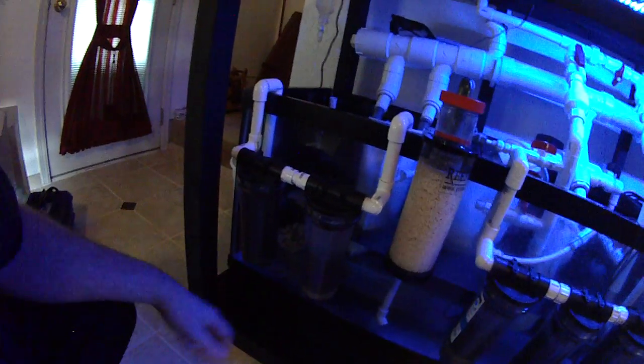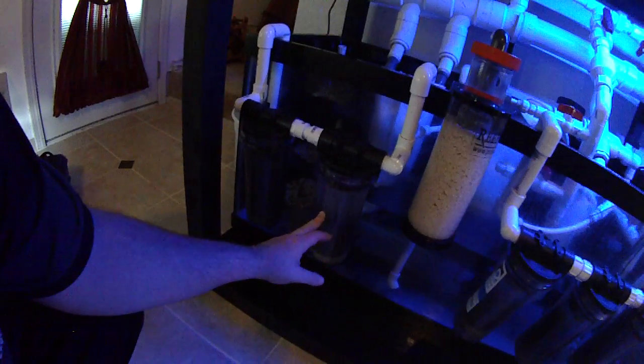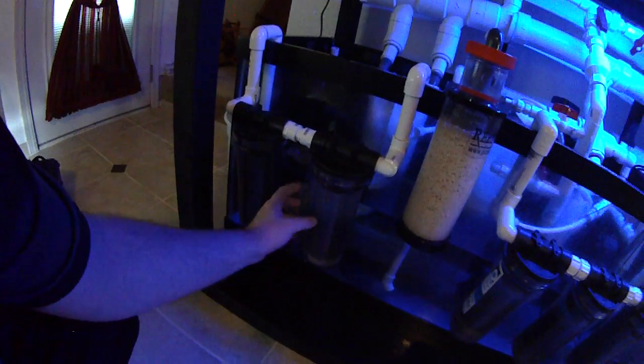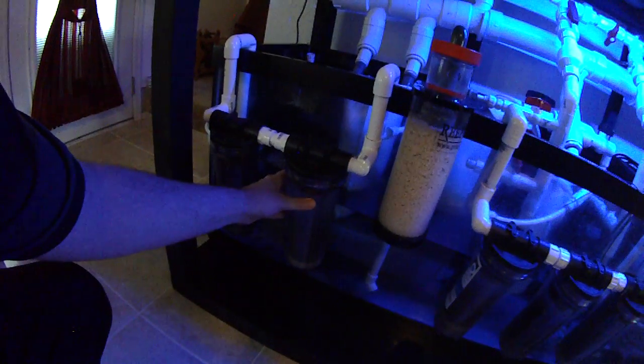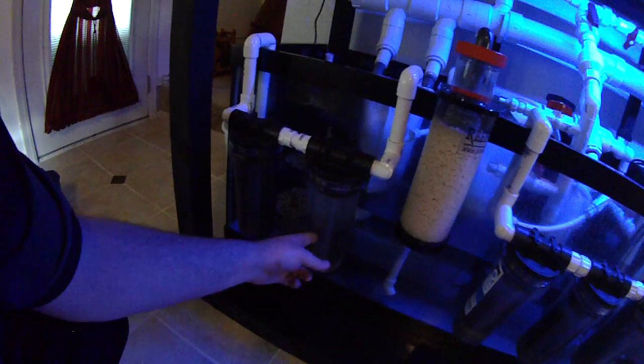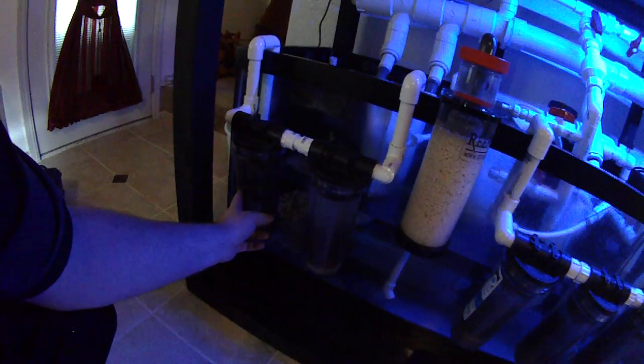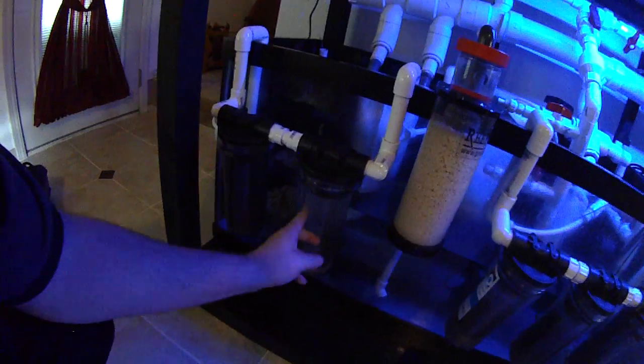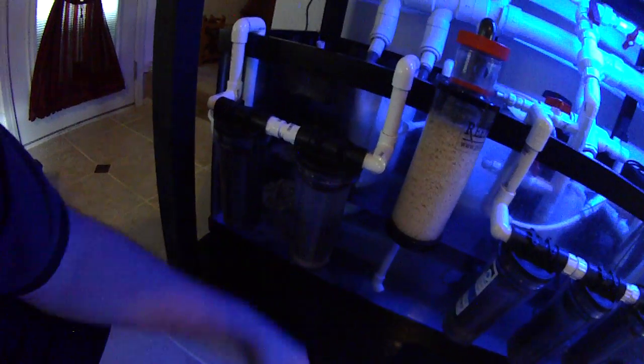And then you got to get from bulk reef supply or the filter guys, or there's a couple other websites to get them, a unit. It's a holder to put inside that holds your media. There's carbon in this one and GFO in this one, or it's also sold as a brand name, ROA Foz or Fozbane or any number of products.